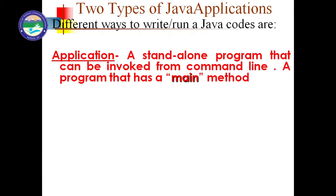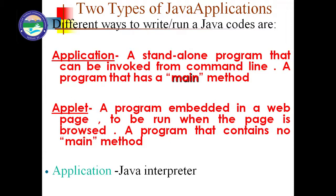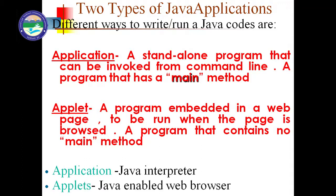You can see the difference between the core Java program and the Applet program. An application is a standalone program that can be invoked from the command line — a program that has a main method. The core Java program has the main method, while in the case of an Applet program, Applet contains no main method. For application we require a Java interpreter, and for Applet we require a Java-enabled web browser.